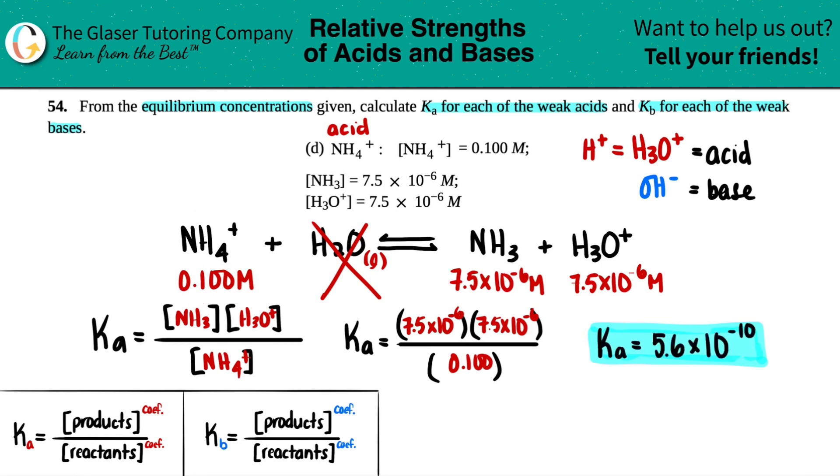If you look at the difference, you start off with 0.1 molarity and you're only at 7.5×10^-6 molarity for your products at the end. This did not want to budge, which makes sense with a really low Ka value.